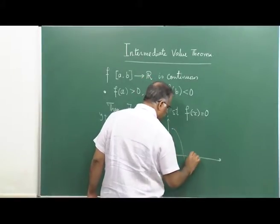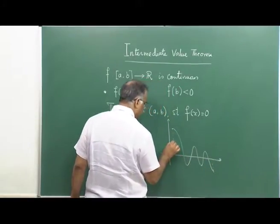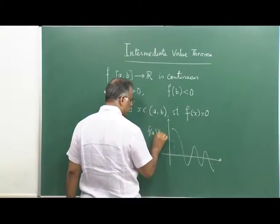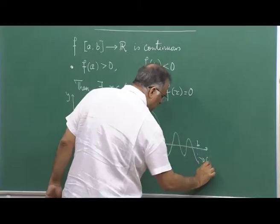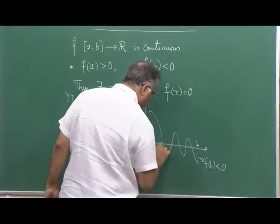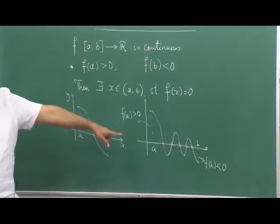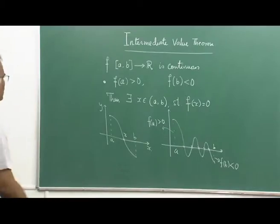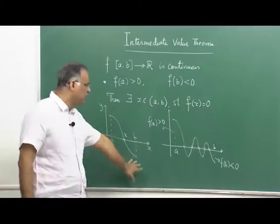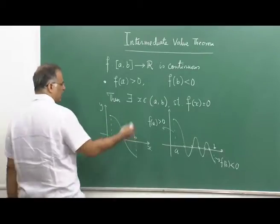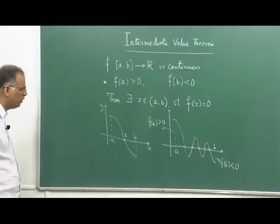Now let us look at a situation where we can have more than one point where f(x) equals 0. Some function could be like this: f(a) is still bigger than 0 and f(b) is still less than 0, but you have 1, 2, 3, 4, 5 points at which the function attains the value 0. So the statement says 'there exists an x' — it does not say there exists only one x. There can be more than one x; possibly countably infinite or uncountably infinite x's. Functions would look very complex; we are not getting into that.